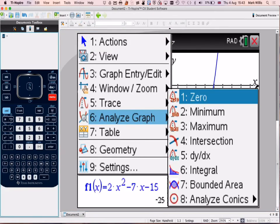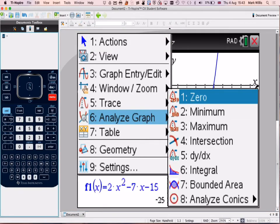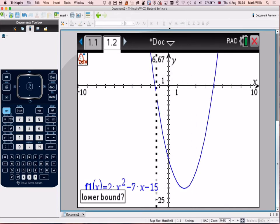Menu, number 6, analyze the graph. And they call them, rather than roots or solutions, they call them zero. It's sort of American terminology. So we're finding the zeros, but what we are doing, we're solving the equation. So we'll press number 1, and we get this idea of lower bound.